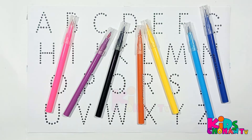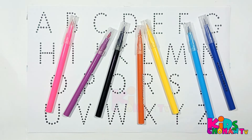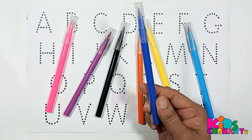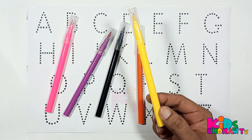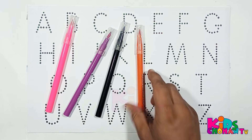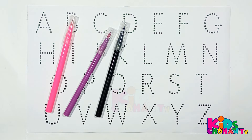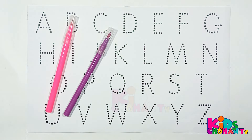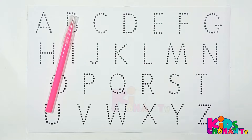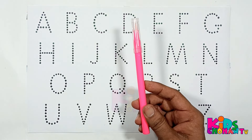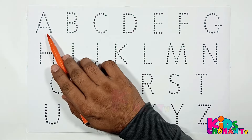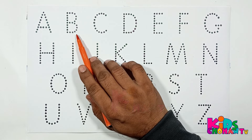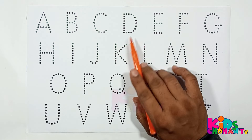Hi kids, welcome back! Let's learn color names: blue color, sky blue color, yellow color, orange color, black color, purple color, and pink color. Kids, let's learn A B C D.